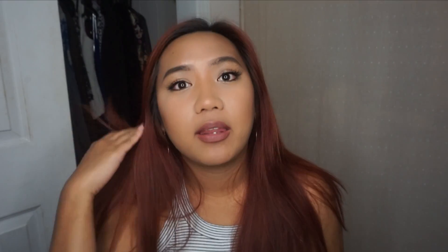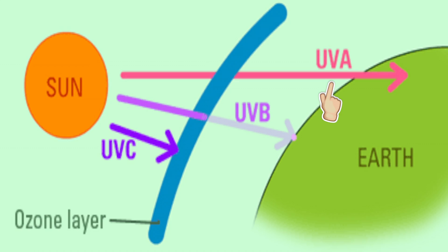UV stands for ultraviolet, and there are three kinds of UV rays you'll want to protect your skin from: UVA, UVB, and UVC. Luckily, the ozone layer still protects us from UVC because it's actually deadly. For UVA and UVB, we can apply something on our face to protect us.